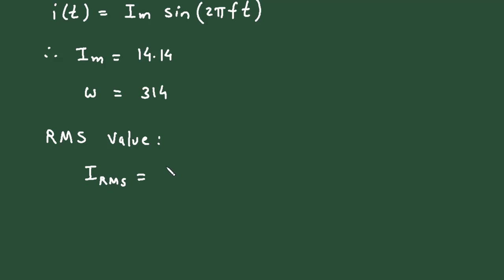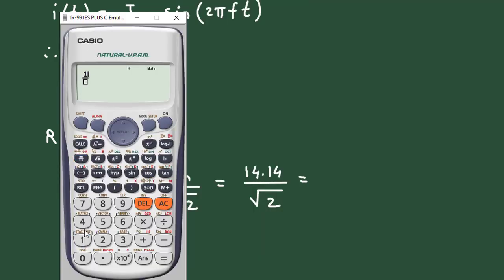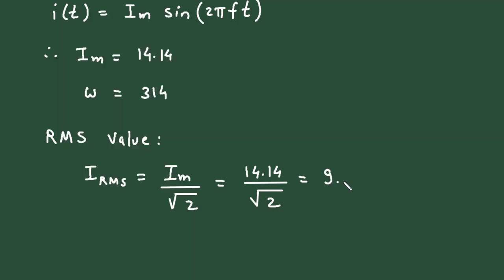We know that I RMS equals Im divided by root 2. So, Im value is 14.14 divided by root 2, which equals 9.998, approximately equal to 10 ampere. Therefore, I RMS equals 10 ampere.